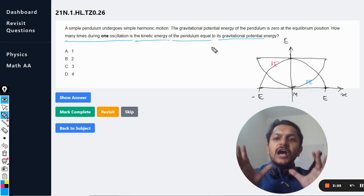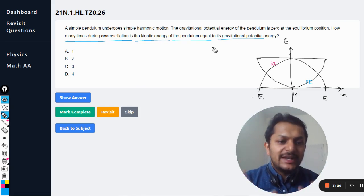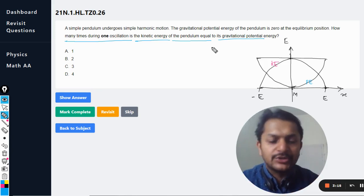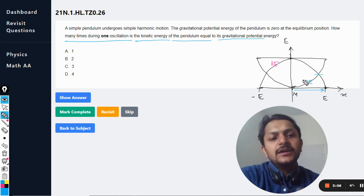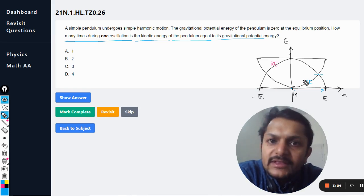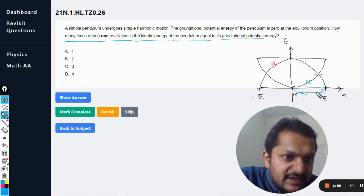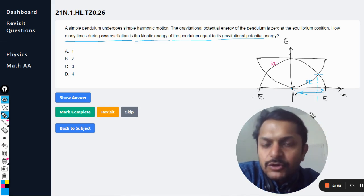We have to complete one oscillation. Let us start from the mean position and keep on moving until we are coming back to the mean position. We start from this point and we go to this point. This is the point where the potential energy becomes equal with the kinetic energy. Then back again it is going, and again it is witnessing this point. So twice the kinetic energy is equal to the potential energy for half of the oscillation.